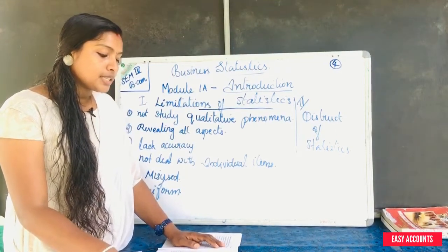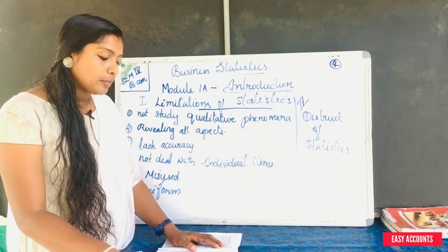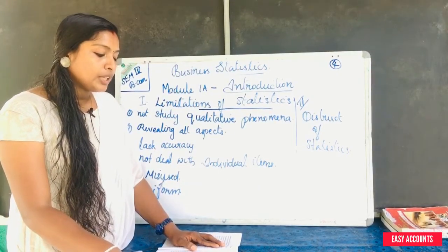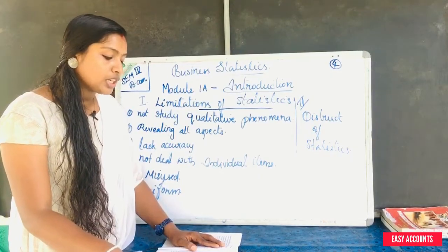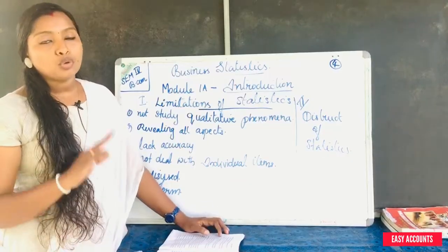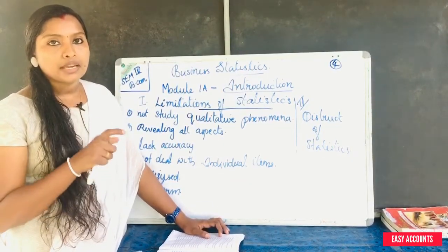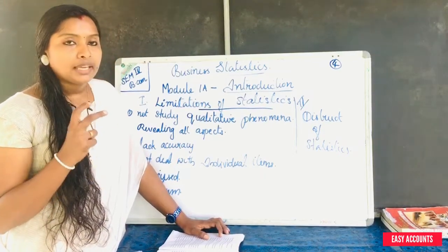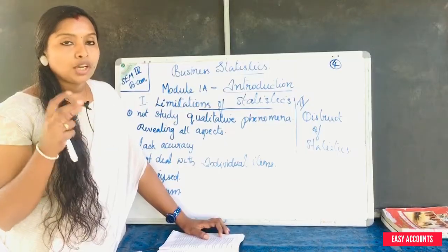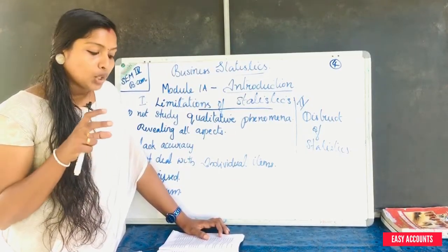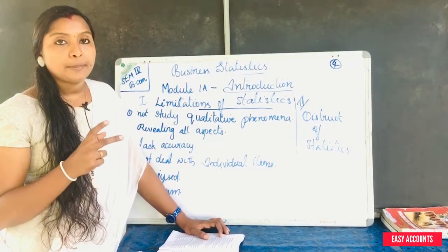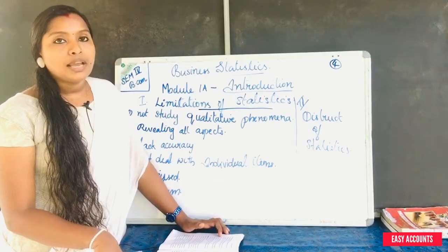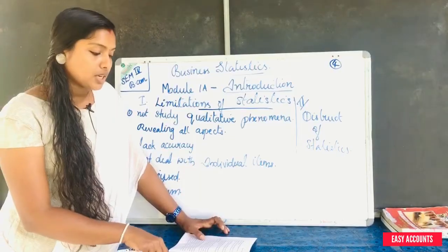Statistics does not deal with individual items. A statistical series is condensed into an average for purposes of comparison, though an individual item of a series has no specific recognition. For example, the per capita income is obtained by dividing the total income by the total population — it does not reveal the poverty of individuals.